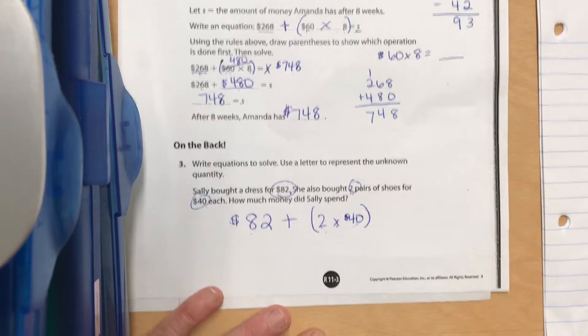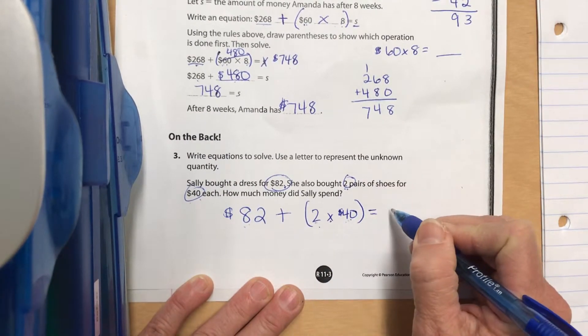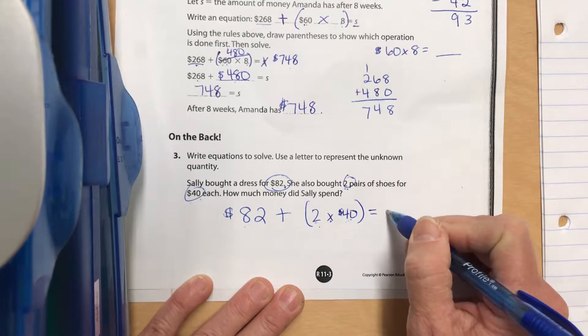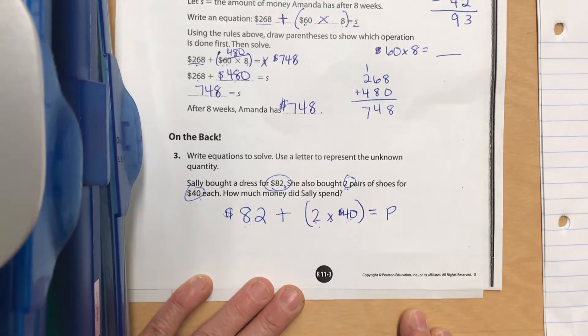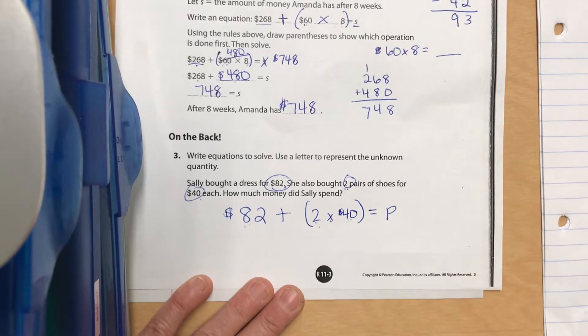Go ahead and calculate that and get an answer. The answer needs to equal - you make up a letter. I'm going to say P for the price, but you go ahead and make up a letter and tell me what your answer is. Pause it and come back.